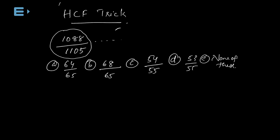If we consider the fraction, there is a difference in the numerator and denominator. The difference is 1105 minus 1088, which is 17. So we reduce these numbers by 17. That concept is reduced.